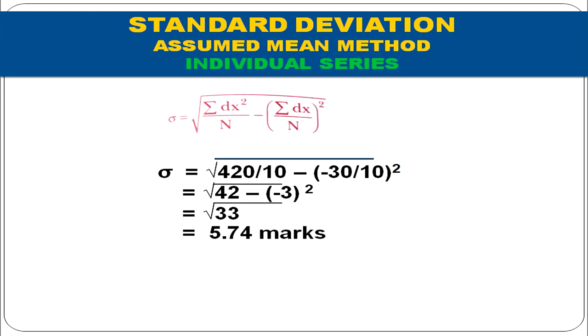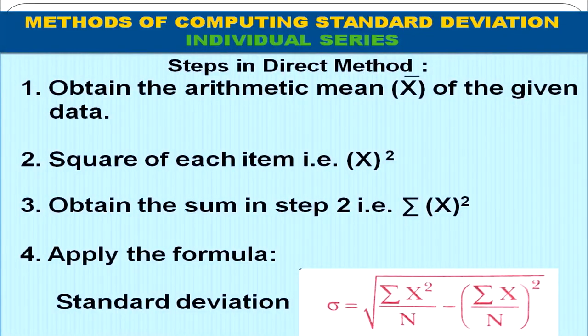Now we are going to discuss how to calculate standard deviation by the direct method in individual series. The steps are: first, calculate the mean. Second, square each item value x to get x². Third, obtain Σx² (capital X squared). The formula is: σ = √(ΣX² / n − (Σx / n)²), meaning we take the sum of squared item values divided by n, then subtract the square of the mean.